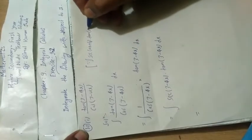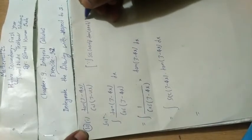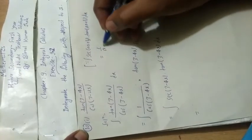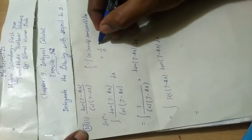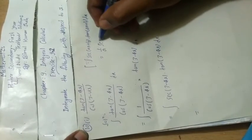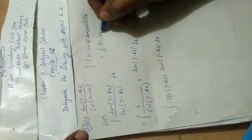We have one standard formula: integral of sec of ax plus b into tan of ax plus b dx is equal to then we write here 1 by a coefficient, and then sec, so it will be now here sec of ax plus b plus constant c.